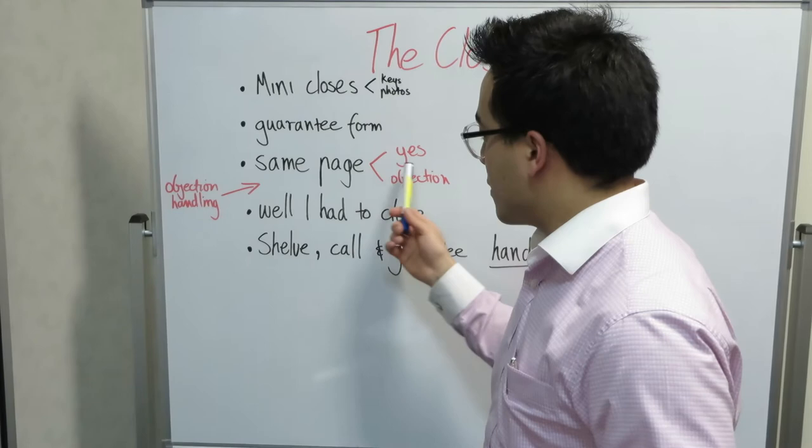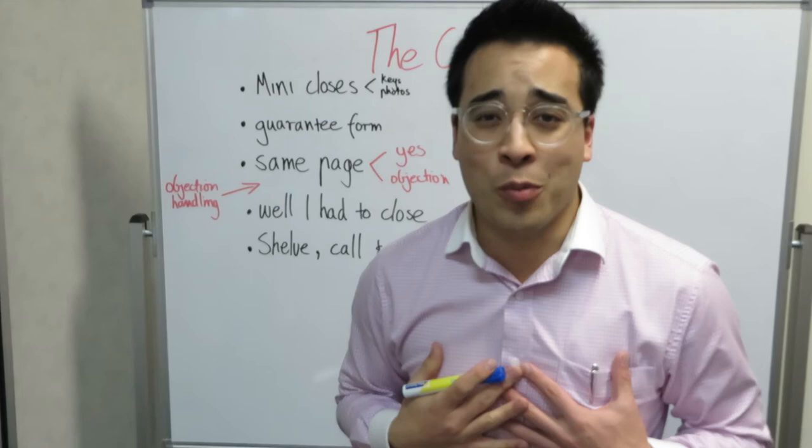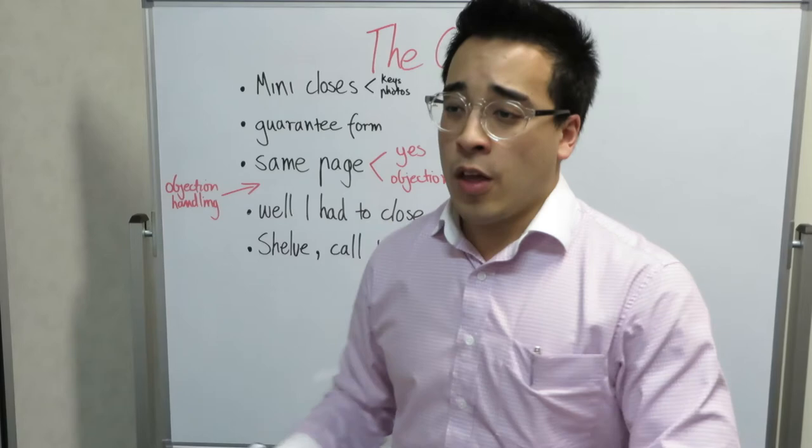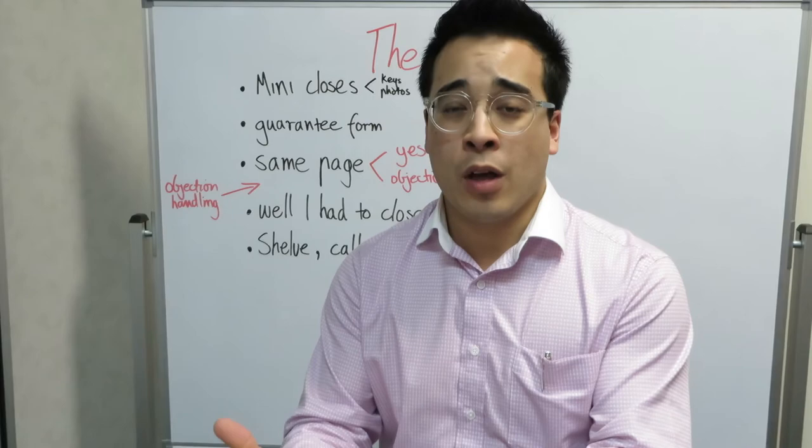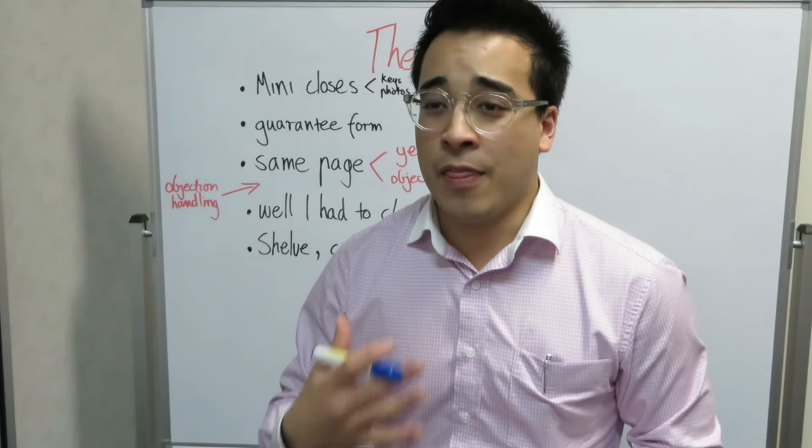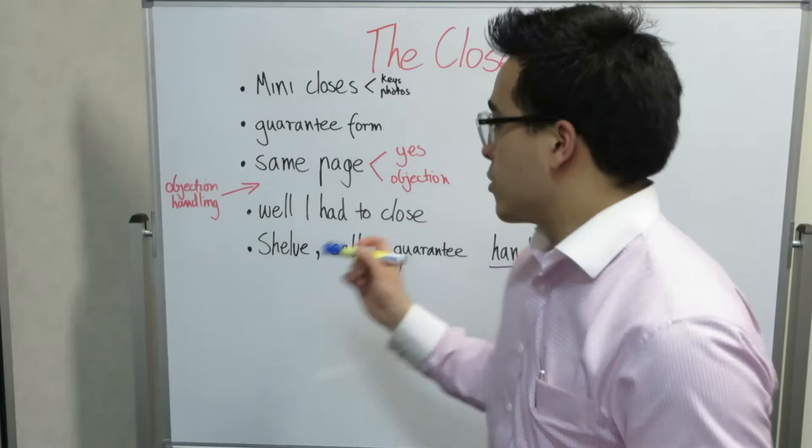And then, so if it is that objection handling, then I'll go back into this format. Well, look, I had to go for the close. That's my job. And if I'm showing a buyer at your house and they say that they want to look at another agent's house or they want to think about it, I'm going to try and close them because that's my job and that's what you want me to do. And so I want you to see that. It's a good thing because that's in my personality. That's in my blood. That's in my DNA. And that's what I'll do when I'm representing you. Does that make you feel comfortable and is that the kind of agent that you want working for you?